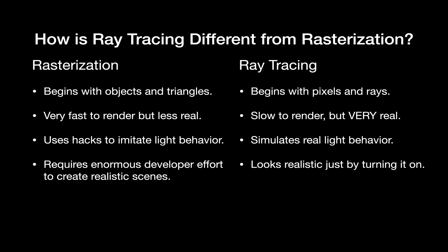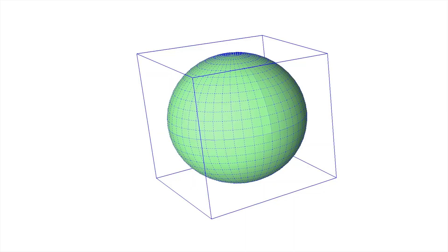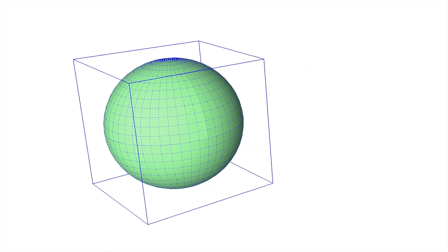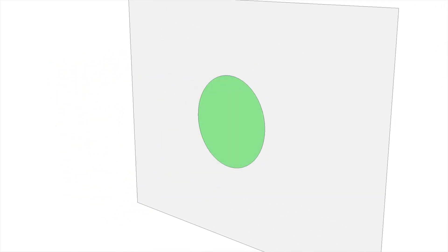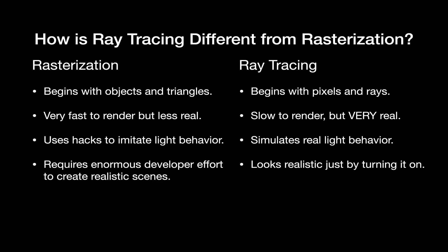Most game engines use a rendering technique called rasterization. Rasterization begins with 3D objects — it projects the object triangles from 3D space into the 2D space of the screen and then splits those triangles up into pixels. With ray tracing it's the other way around: we begin with the pixels and calculate their color by casting rays into the scene and seeing what they hit. Rasterization is very fast to render but less realistic; ray tracing on the other hand is slow because of how much math is involved, but the results can be ultra realistic.